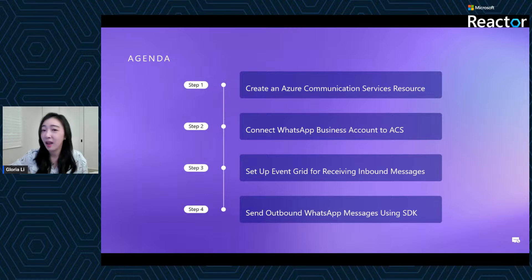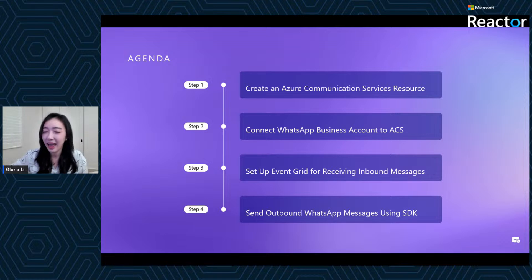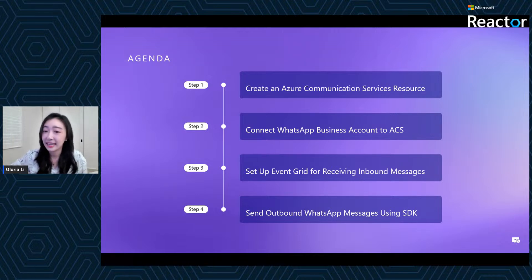Here's our agenda for today. We will start by creating an Azure Communication Services — or ACS — resource through the Azure portal and explore the built-in sandbox experience. Next, we will walk through how to connect a WhatsApp business account to your ACS resource. Then I will demonstrate how to set up Event Grid to receive inbound messages. Finally, we will wrap up by showing how to send WhatsApp messages using the ACS SDK.